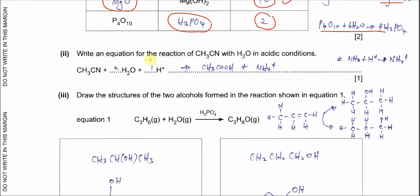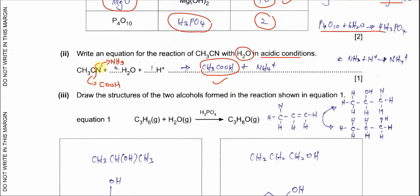Part 2: write equations for the reaction of CH₃CN (ethanenitrile) with H₂O in acidic conditions. This is a hydrolysis reaction. The C≡N triple bond breaks: the carbon forms a carboxylic acid (COOH) and the nitrogen forms ammonia. Therefore the products are ethanoic acid (CH₃COOH) and ammonia.